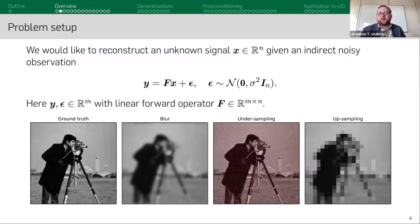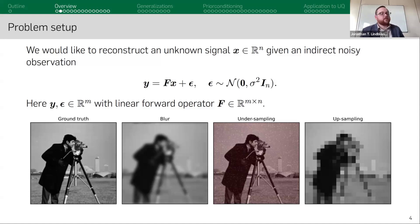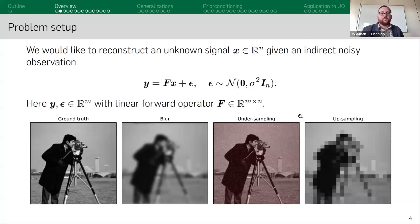The problem setup is very general. We're considering the task of having some unknown source or signal vector x in R^n, and we've been given an indirect noisy observation of this vector. Our source x has been presented through the linear operator F in R^(m×n) — just a linear transformation. There are extensions to non-linear operators such as PDE models. We suppose it's been contaminated with Gaussian noise epsilon, mirroring the real world where we always have noisy data. F could be, for example, a blurring operator, a local averaging operator in satellite imaging, undersampling, or upsampling.